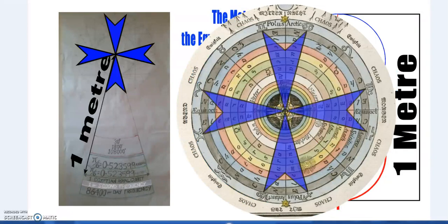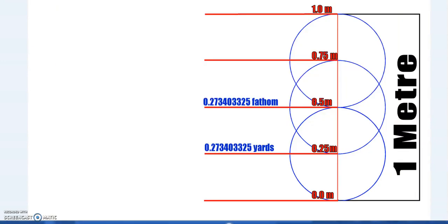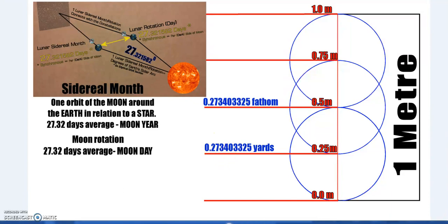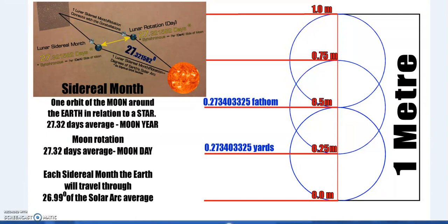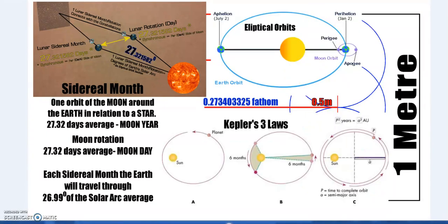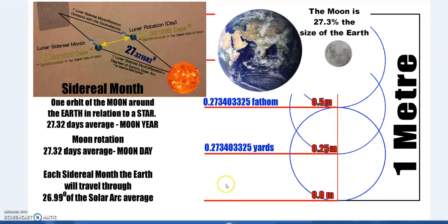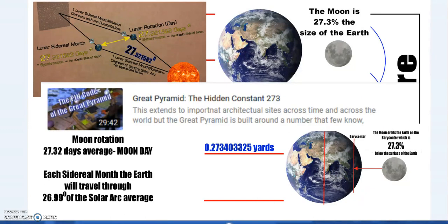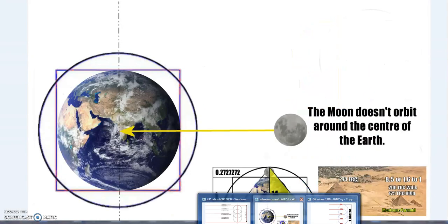Using that same system we have 0.273403325 yards. This is important because a sidereal month — one orbit of the Moon around the Earth in relation to a star — is 27.32 days on average. Also, the Moon rotates once on its axis every 27.32 days. The Moon is 27.3% the size of the Earth, and we also have the Barycenter beneath there.